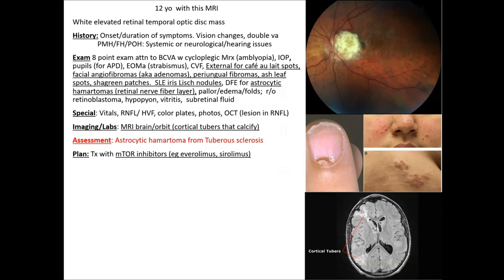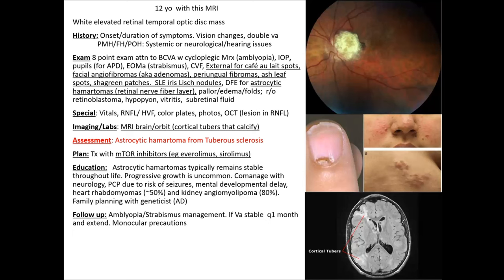Best in-clinic test for astrocytic hamartoma is RNFL OCT, since it's found in the retinal nerve fiber layer. Also do visual fields. Imaging (MRI) shows cortical tubers which can calcify and cause seizures. Tuberous sclerosis is also called Bourneville-Pringle disease. Treatment: astrocytic hamartomas typically remain stable throughout life; progressive growth is uncommon. mTOR inhibitors like everolimus, sirolimus, and tacrolimus can shrink these lesions.